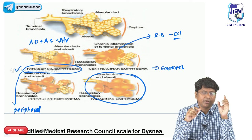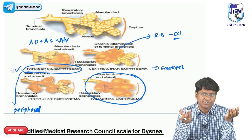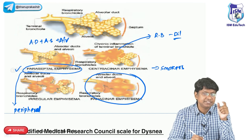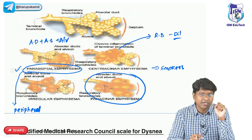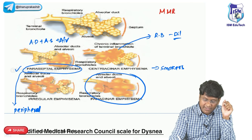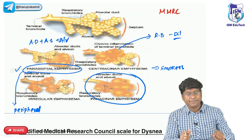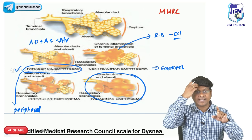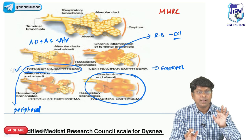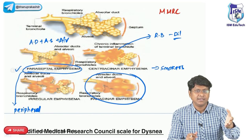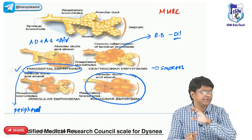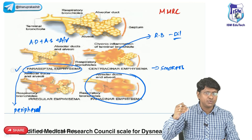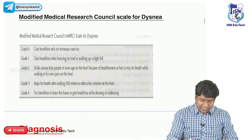In chronic bronchitis, the common presentation is cough with expectoration. In emphysema, the most common presentation is dyspnea. The severity of dyspnea is classified by the Modified Medical Research Council (MMRC) scale, grades 0 to 4. Grade 0 is breathlessness only on strenuous exercise; Grade 4 is dyspnea at rest.